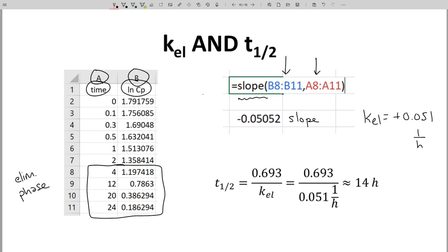To determine half-life, use a simple formula. T1 half equals 0.693 divided by KEL. In this case, half-life equals about 14 hours. Great.